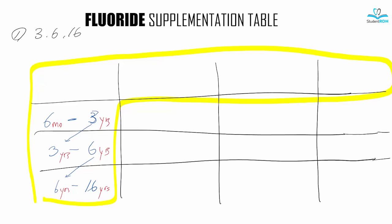After that, we have the top row to fill. If you remember, fluoride supplementation in drinking water recommends 0.7 to 1.2 ppm of fluoride. So we're going to write 0.3 — don't forget to put the 0 in the beginning. Take the last number and the next number again, then take the last number. That gives us: under 0.3 ppm, between 0.3 and 0.6 ppm, and over 0.6 ppm.